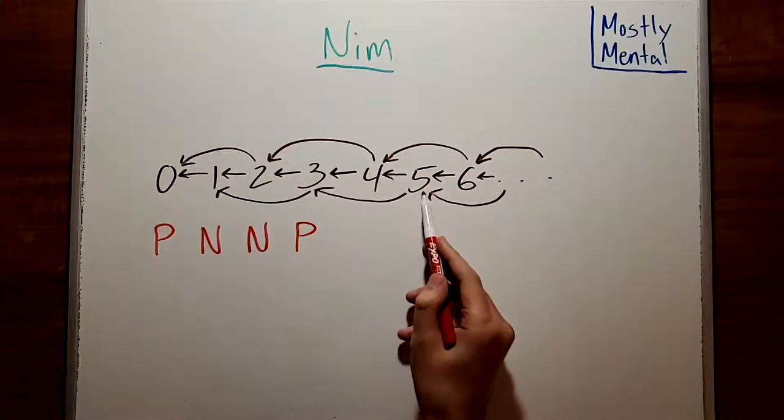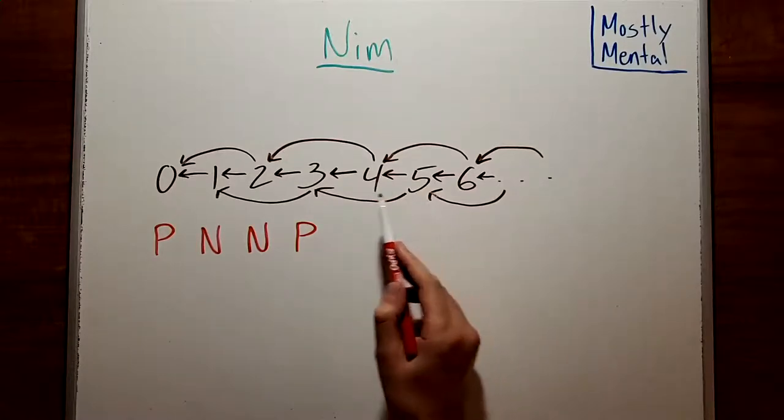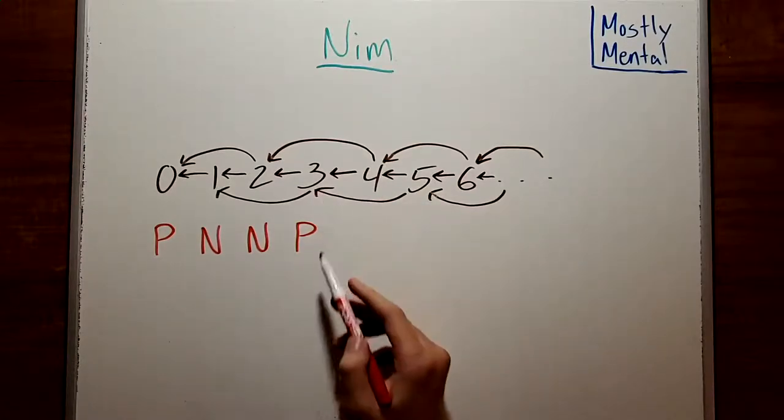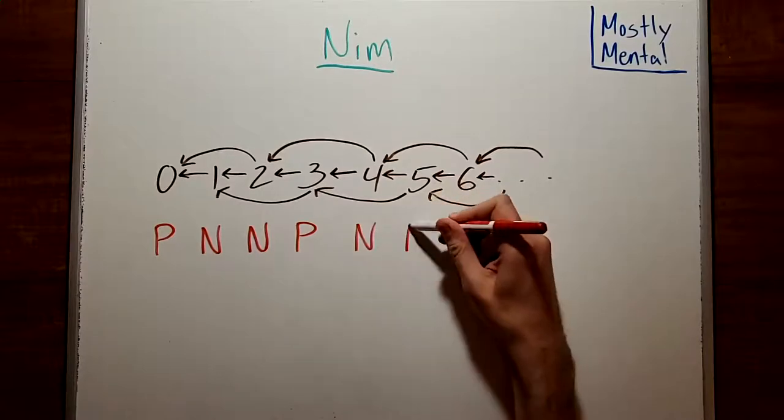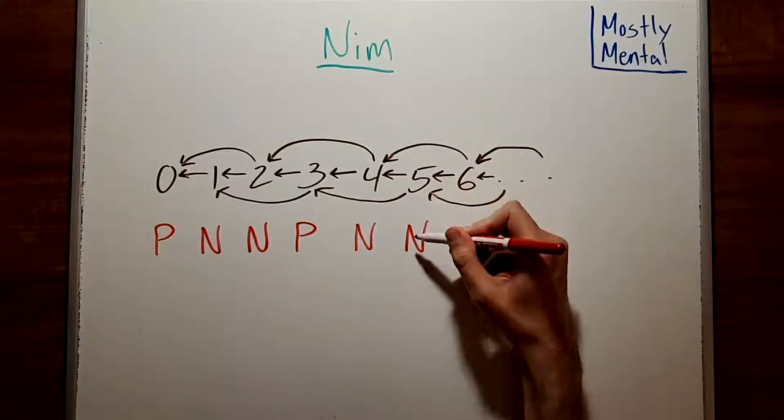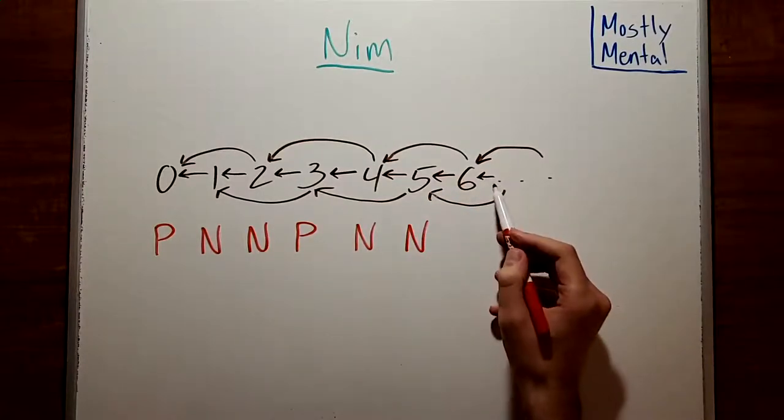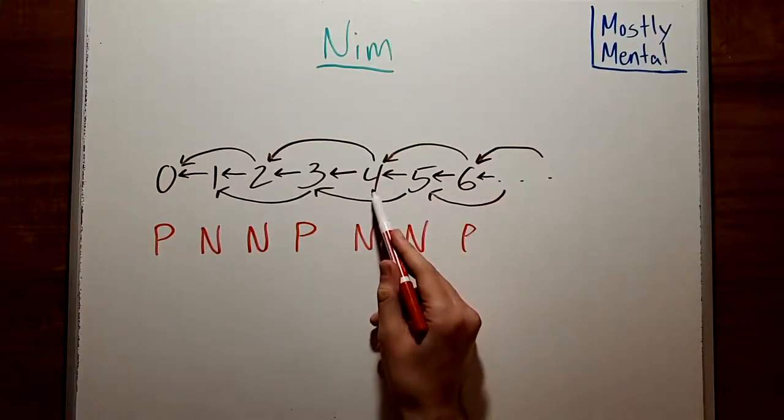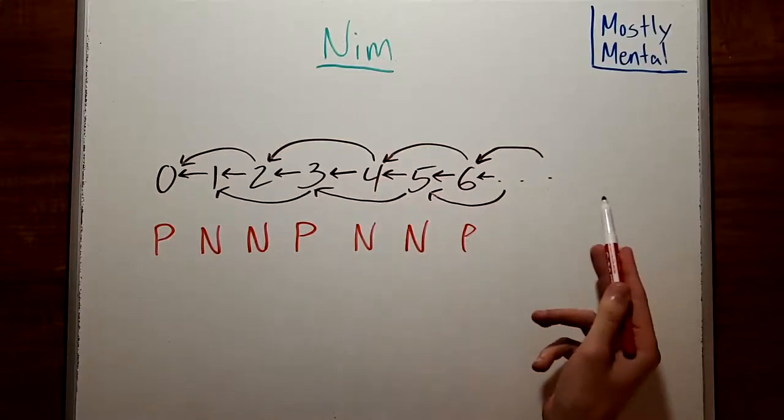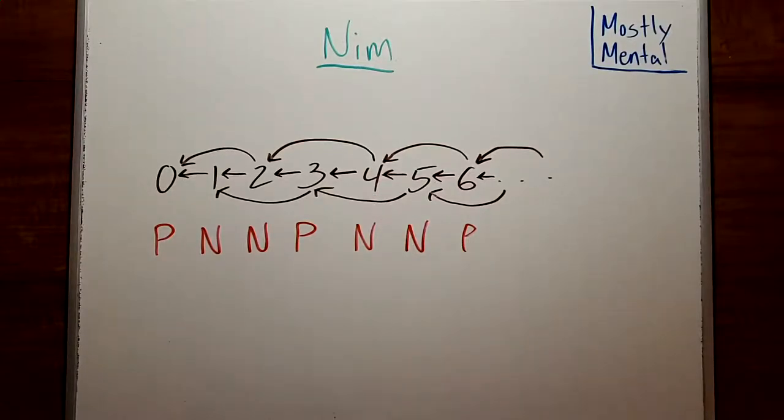And with four or five, the next player can go to three. And since that's a P position, the other player won't have a winning move. So four and five are both N positions. And six is a P position, since the only moves are to five and to four, which are, again, both N positions. And so on. By now, you may have guessed the pattern.